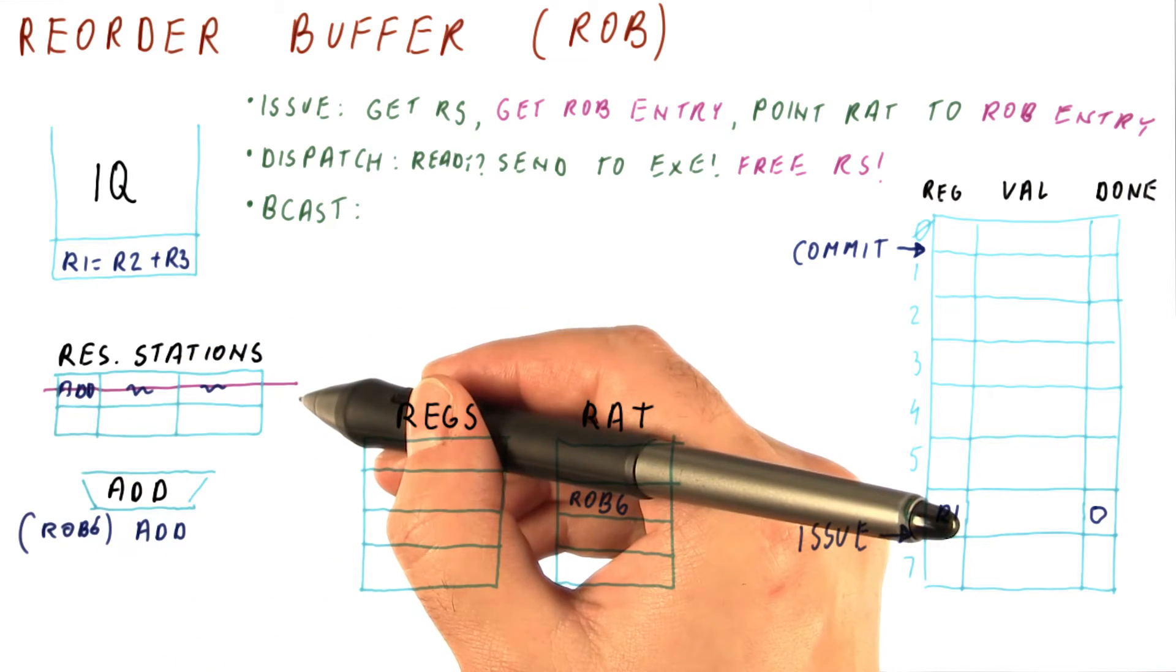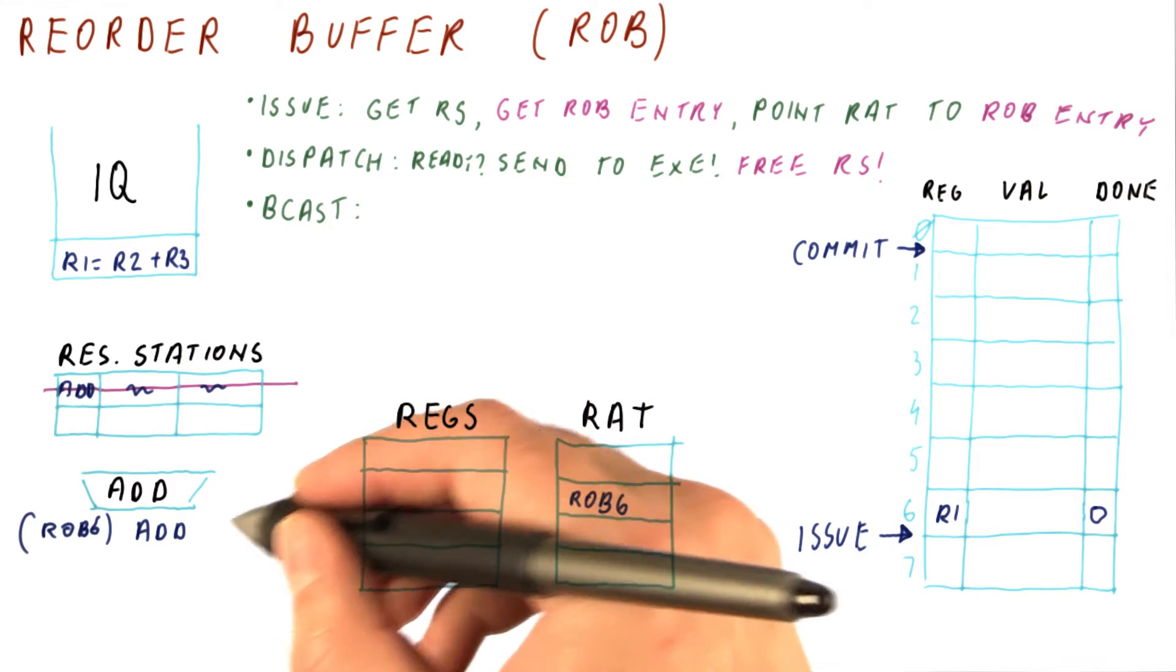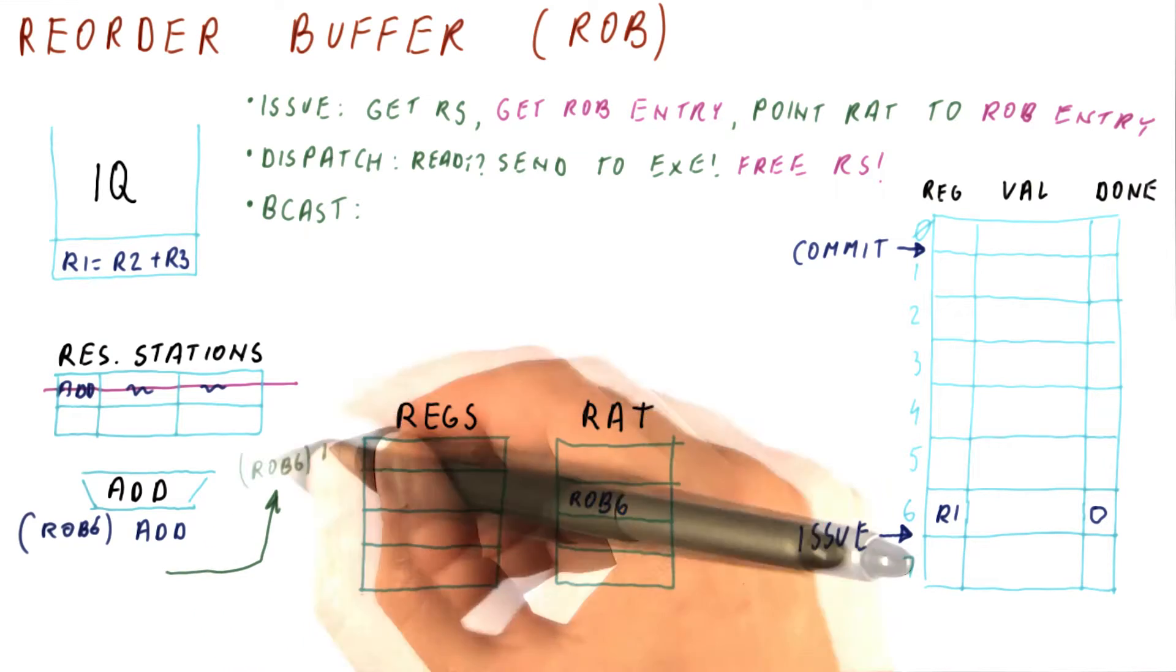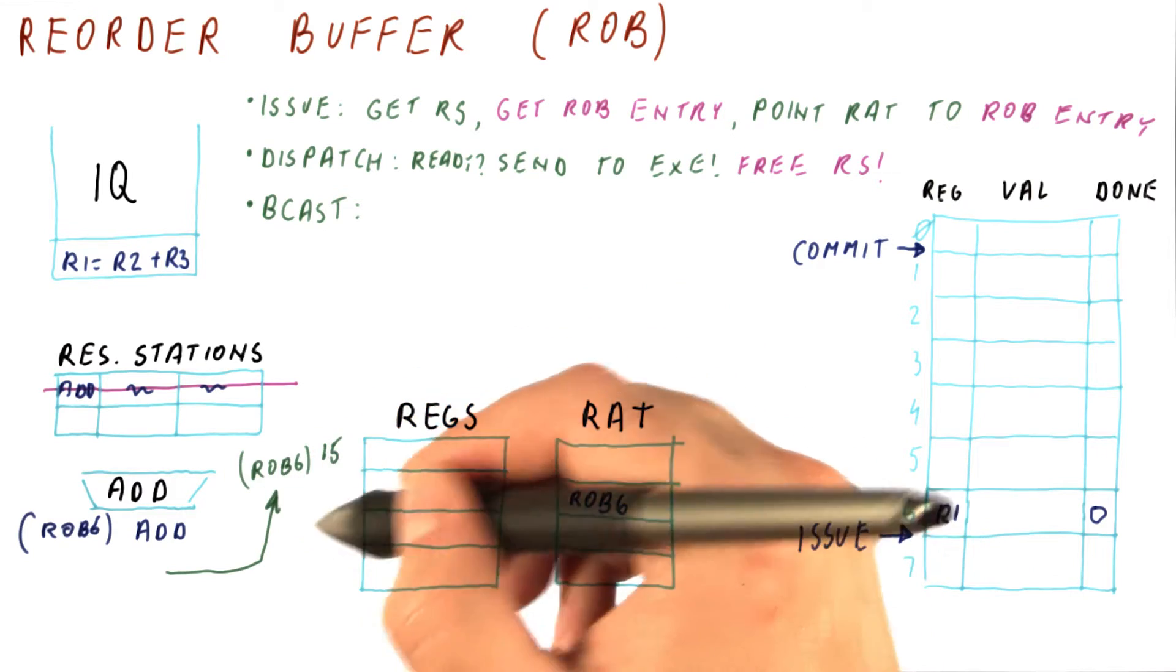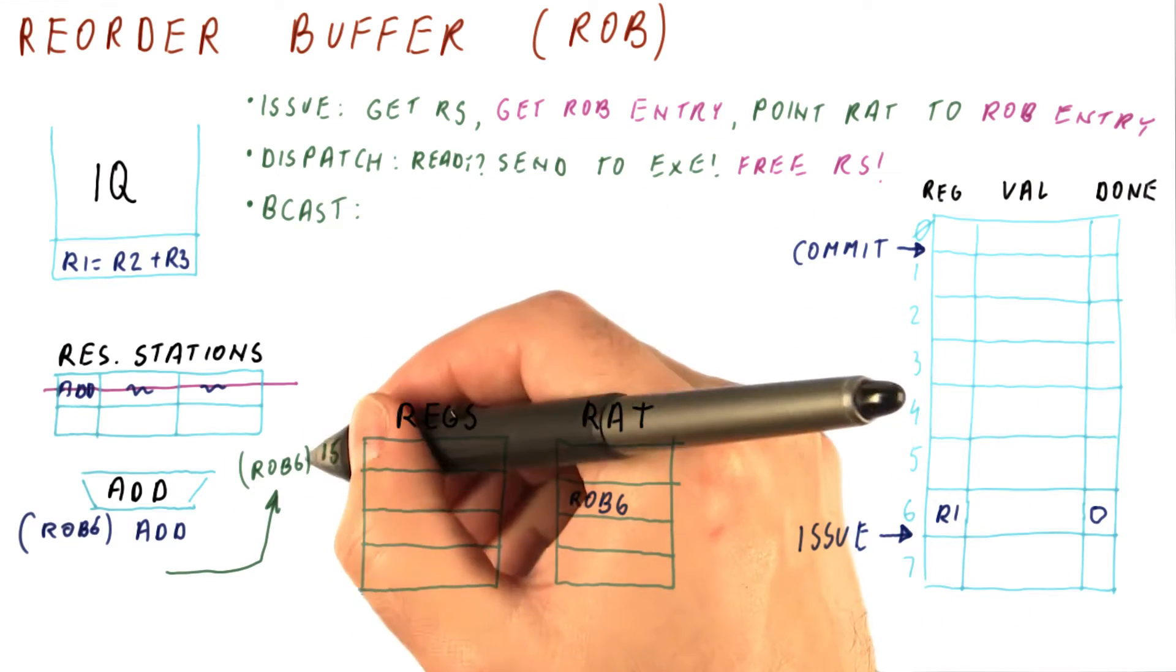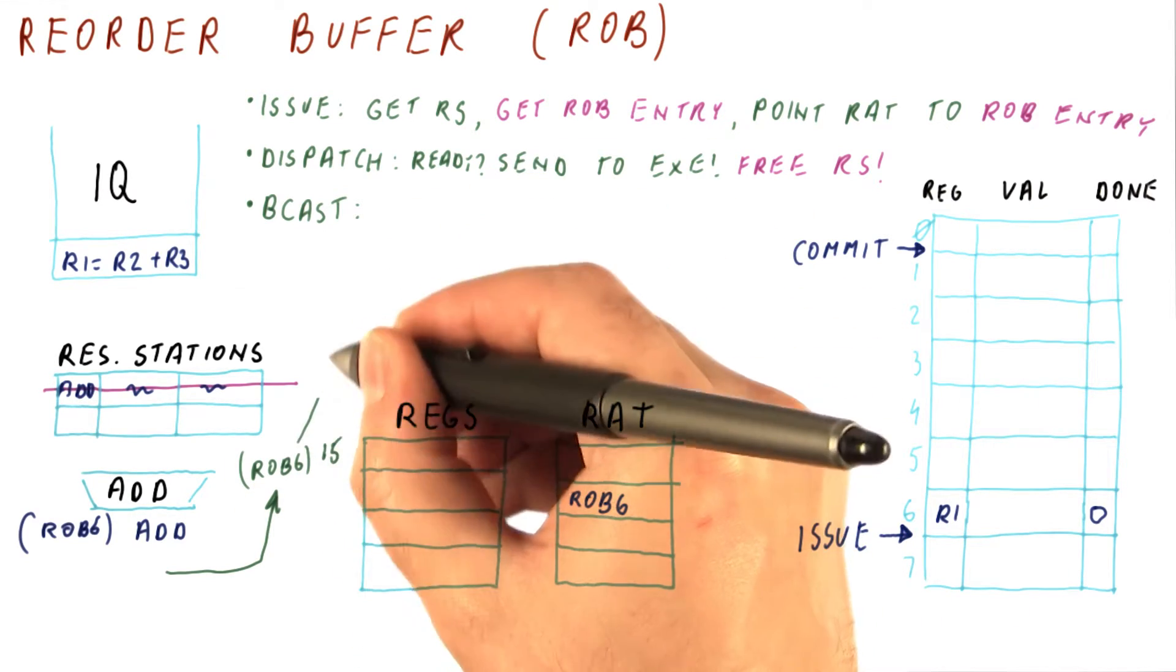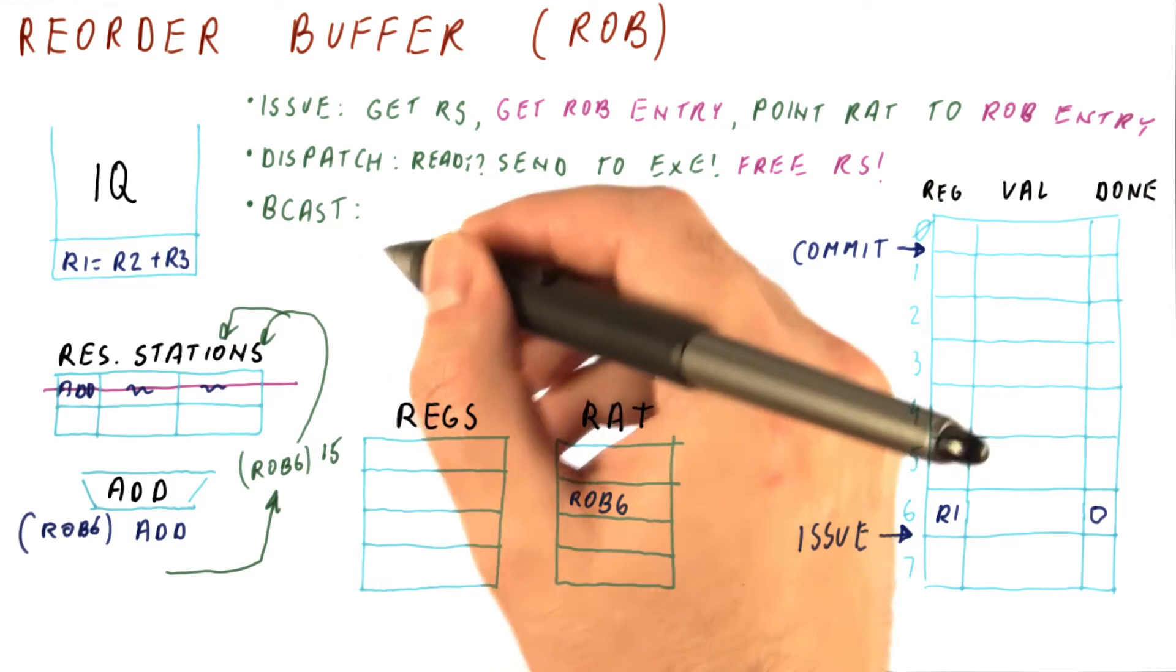Because we have already freed the reservation station. So what we do is we now broadcast the tag of rob6 with a value, let's say 15. Just like with Tomasulo's algorithm, this value and the tag are now given to the reservation stations.